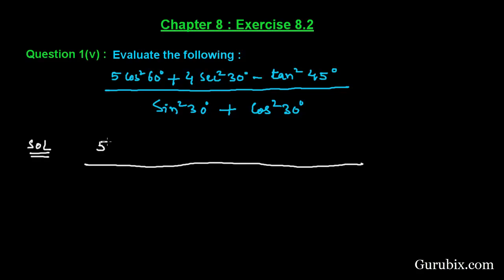5 times cos²60. We know that cos 60 is equals to 1/2, then it will be 5 times (1/2)² plus 4 sec²30. And we know sec 30 is 2/√3, so it will be 4 times (2/√3)² minus tan²45. And we know tan45 equals 1, so it will be 1²